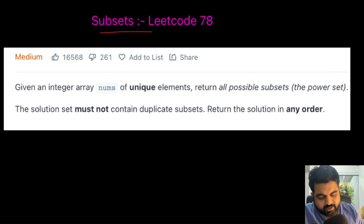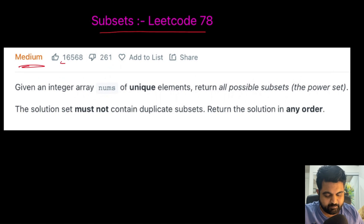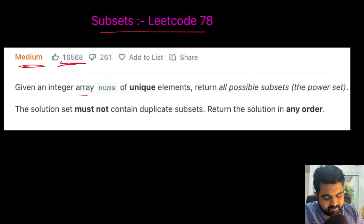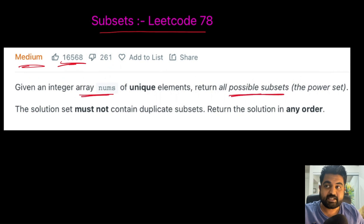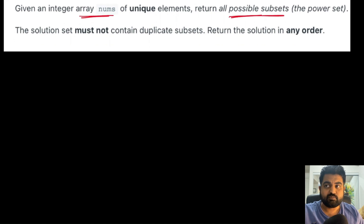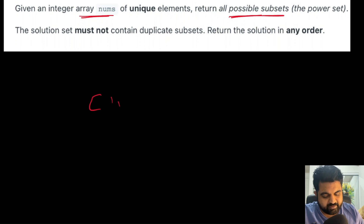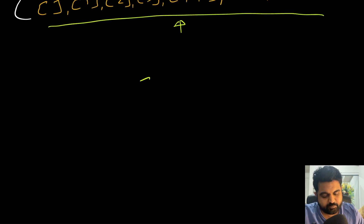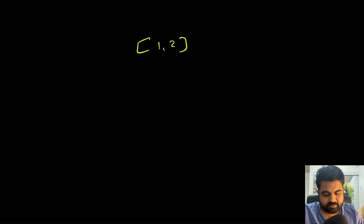The LeetCode problem we are going to do today is called Subsets. This is a medium difficulty and a very well-liked problem on LeetCode. The problem statement is quite straightforward: we are given an integer array called nums and we need to return all the possible subsets of this given array — every single possible combination of values you can make out of the given array.